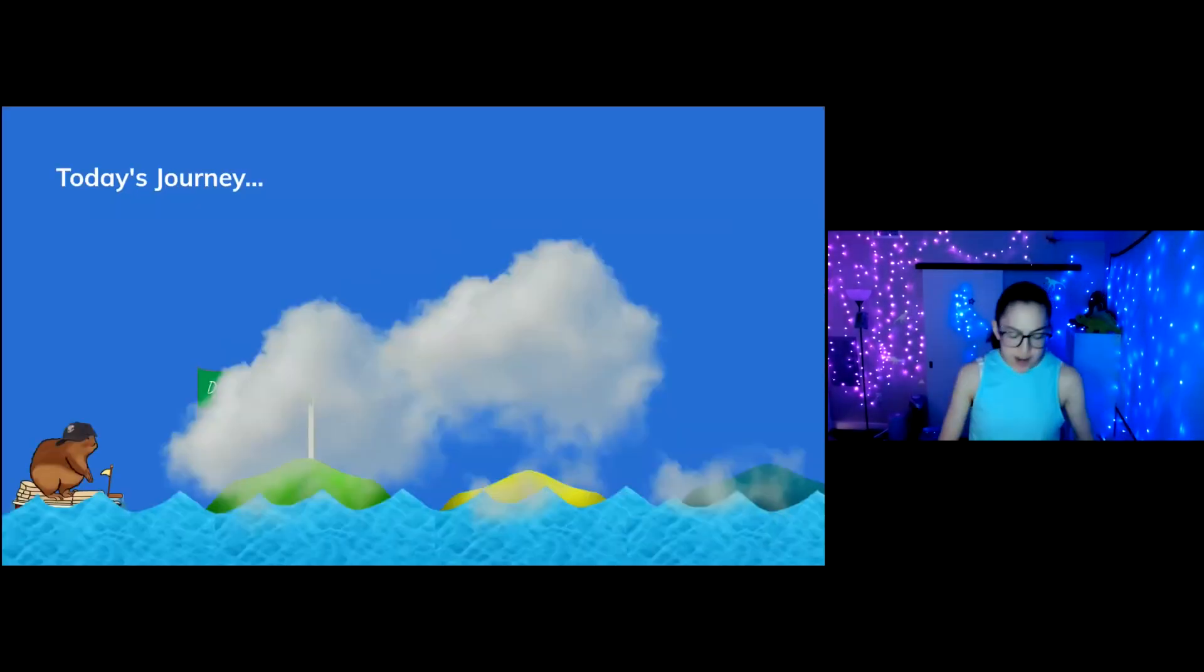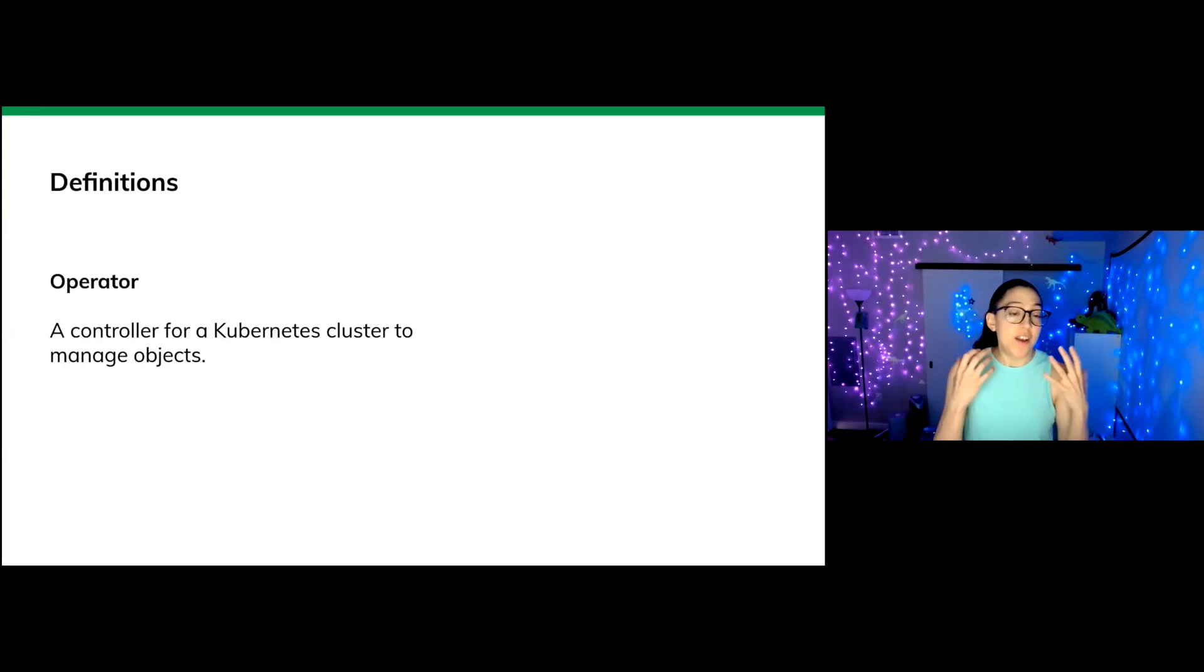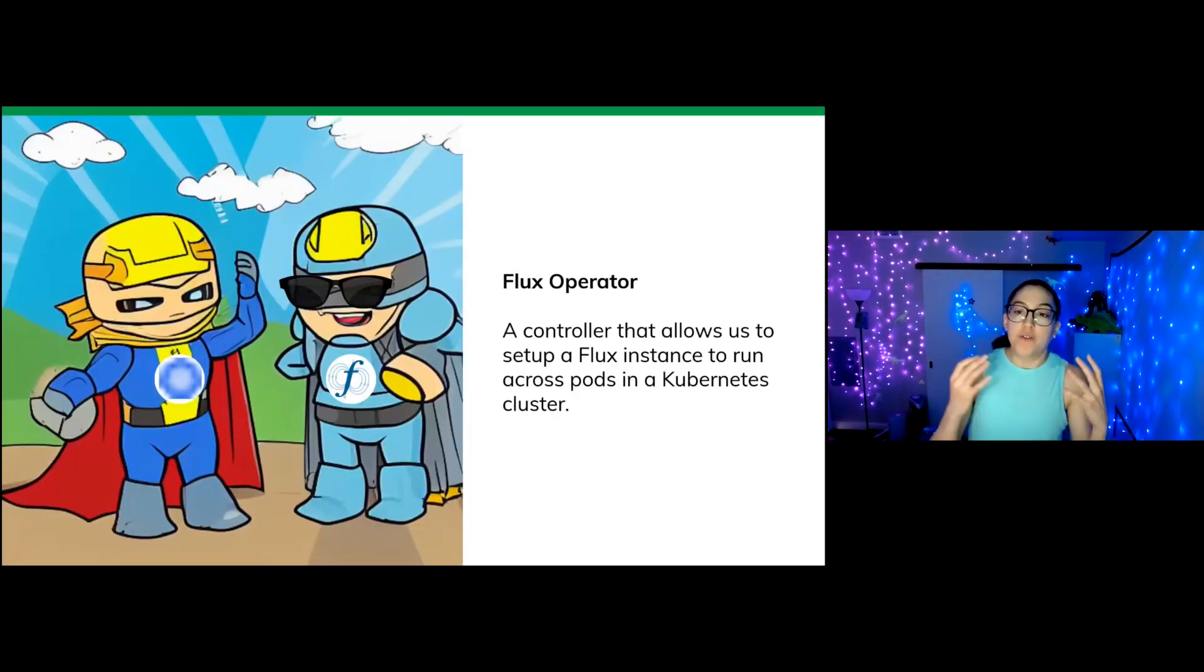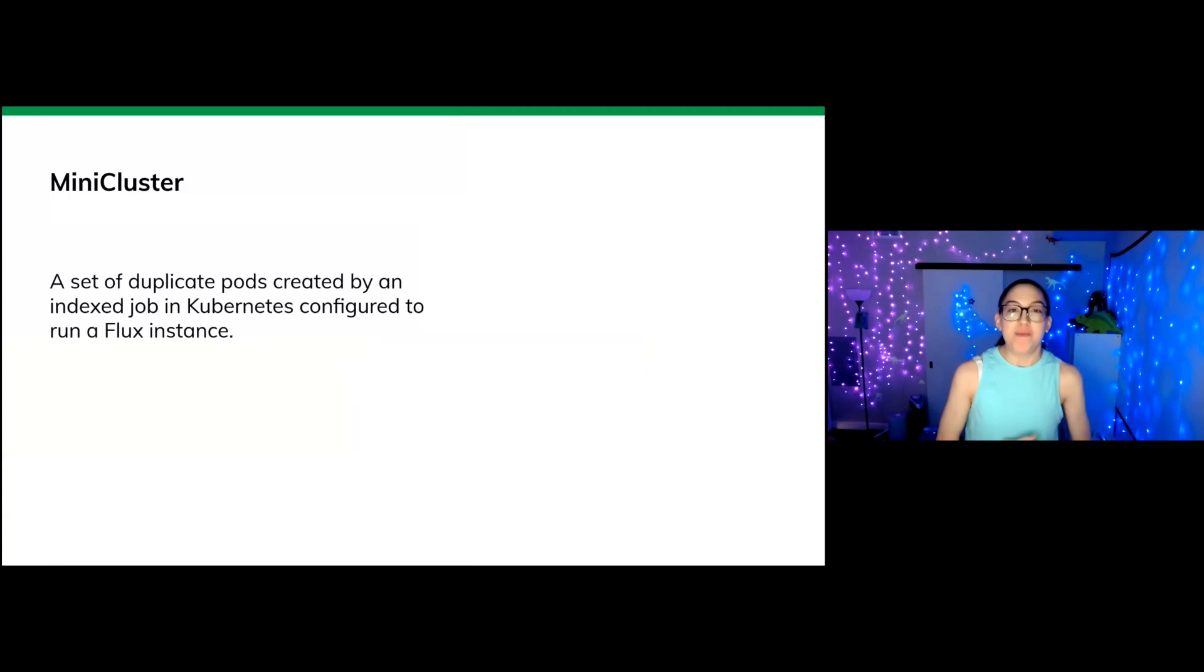Let's get started on today's journey, starting with a stop at Definition Island. So probably most of you know what an operator is. It is a controller for a Kubernetes cluster to manage objects. So the Flux operator is a controller that allows us to set up that Flux instance to run across pods. And specifically this part here, we have a special term for it. We call it a mini cluster. And no, I don't mean a cluster for ants. I actually mean a set of duplicate pods created by the index job. Here is where the index job comes in.